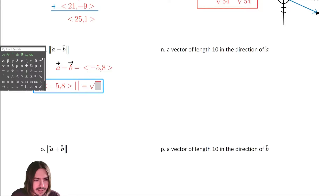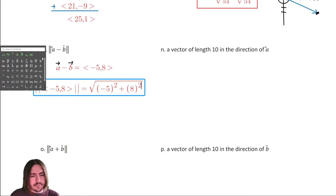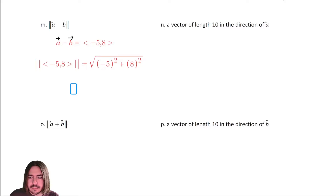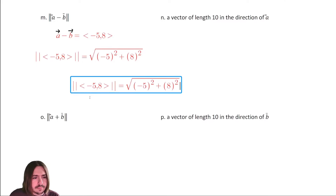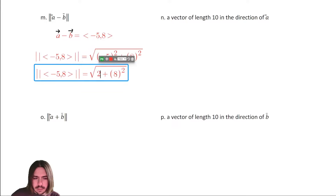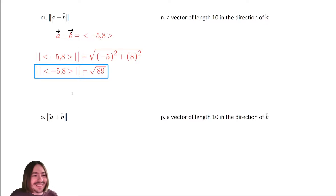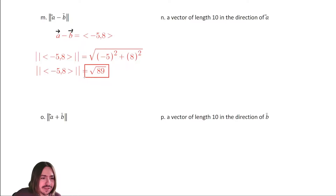Negative five squared is twenty-five and eight squared is sixty-four. Twenty-five plus sixty-four is eighty-nine. So the magnitude of the difference is the square root of eighty-nine. We don't need to go any further — we've found the magnitude of the difference.